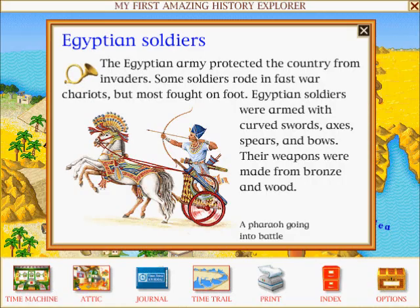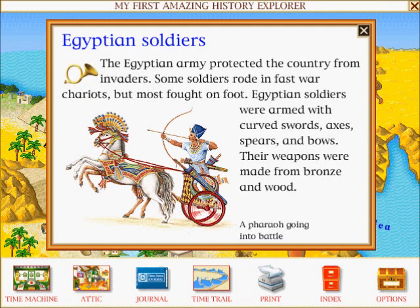Egyptian Soldiers: The Egyptian army protected the country from invaders. Some soldiers rode in fast war chariots, but most fought on foot. Egyptian soldiers were armed with curved swords, axes, spears and bows. Their weapons were made from bronze and wood.